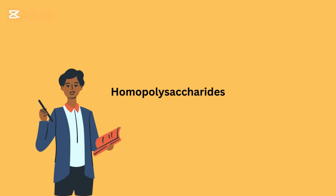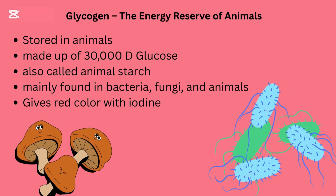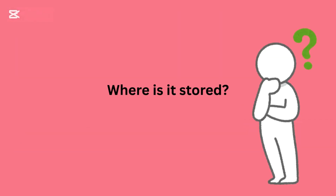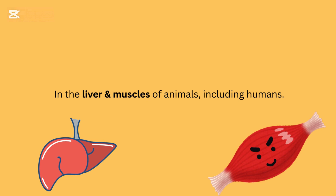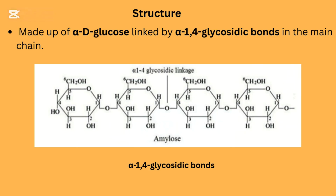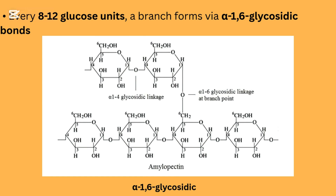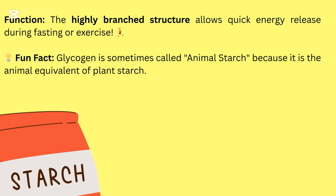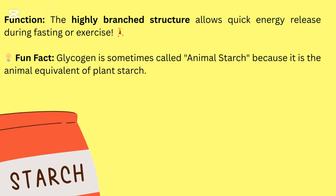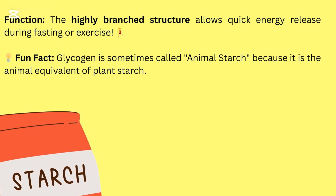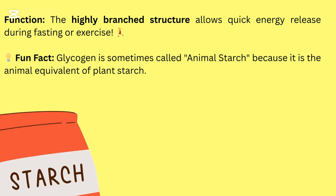Let's break them down. One: glycogen, the energy reserve of animals. It is stored in the liver and muscles of animals, including humans. Structure: made up of alpha-D glucose, linked by alpha-1,4 glycosidic bonds in the main chain, with a branch forming every 8 to 12 glucose units via alpha-1,6 glycosidic bonds. Function: the highly branched structure allows quick energy release during fasting or exercise. Fun fact: glycogen is sometimes called animal starch because it is the animal equivalent of plant starch.